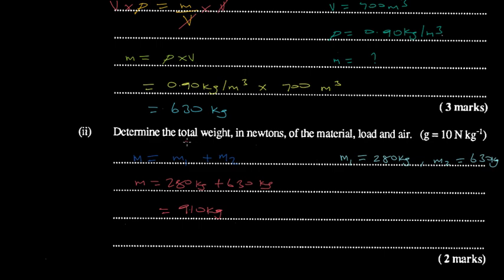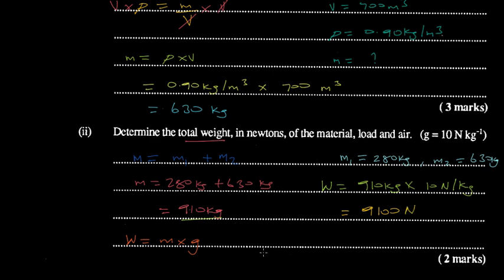Now we find the weight. Weight W equals mass times gravitational field strength: W = 910 kg × 10 N/kg, which gives us 9100 newtons.